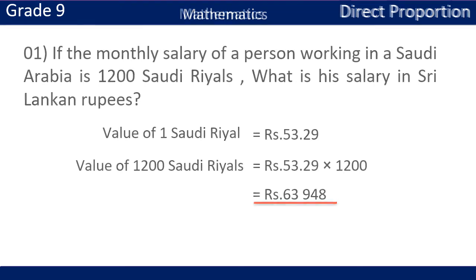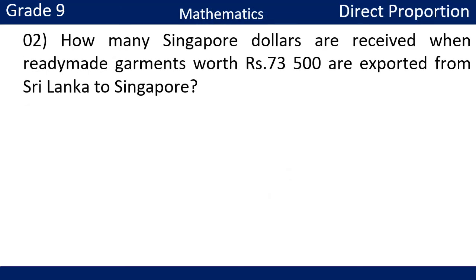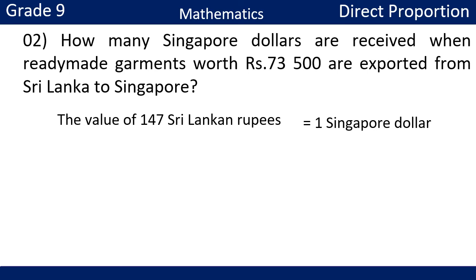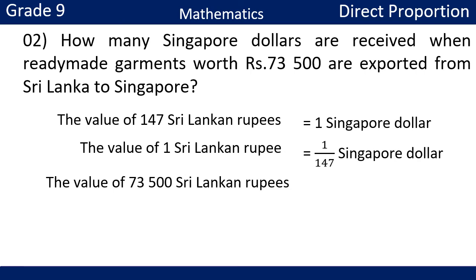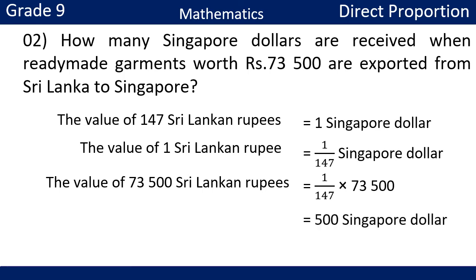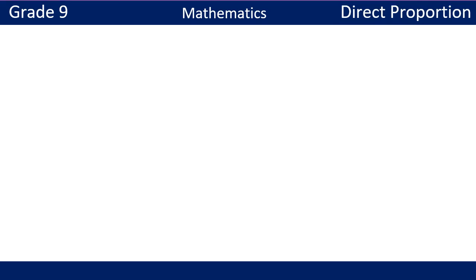Then, look at this example: how many Singapore dollars are received when ready-made garments worth 73,500 rupees are exported from Sri Lanka to Singapore? The value of 147 Sri Lankan rupees is 1 Singapore dollar, so the value of 1 Sri Lankan rupee is 1 over 147 Singapore dollars. Therefore, the value of 73,500 Sri Lankan rupees equals 1 over 147 multiplied by 73,500 Singapore dollars.